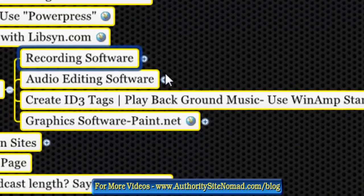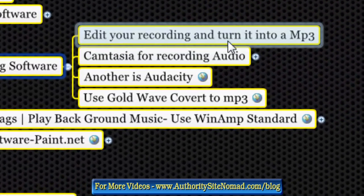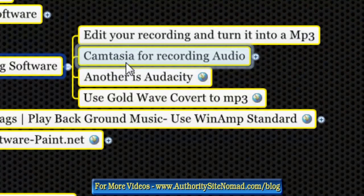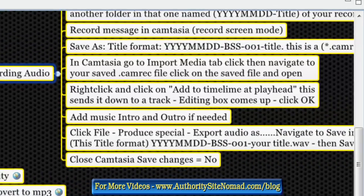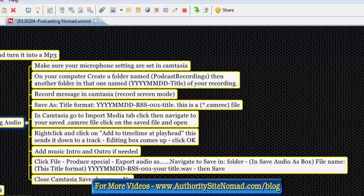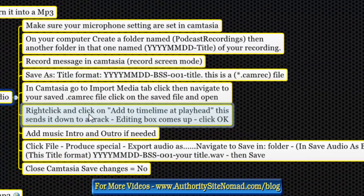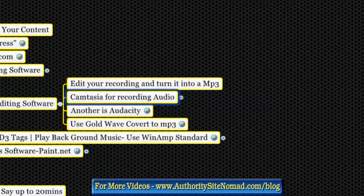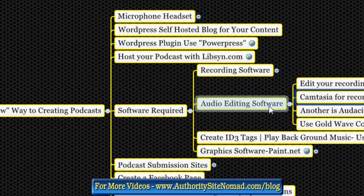We also need editing software to edit our recording and turn it into an MP3. I use Camtasia for both recording and editing. Make sure your microphone settings are set correctly. You name your folders, record your message, save your folder, export it as an MP3, and you can add music as an intro and outro if needed.